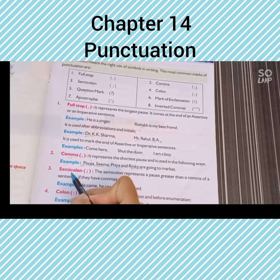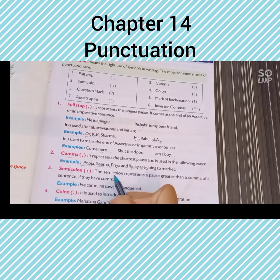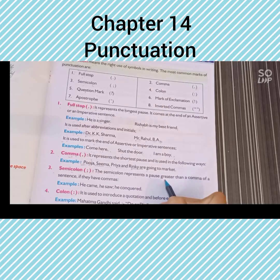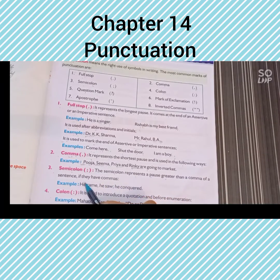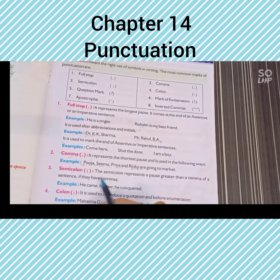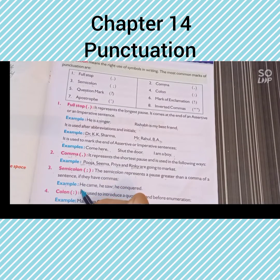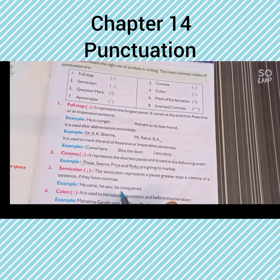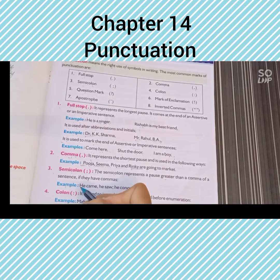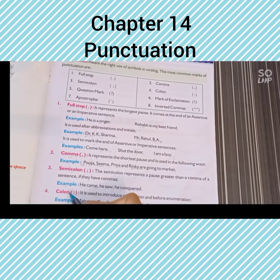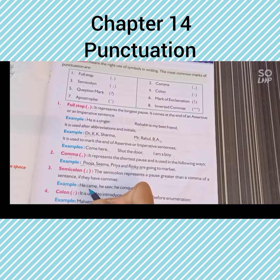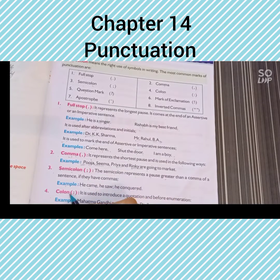Third point is semicolon. The semicolon represents a pause greater than a comma for a sentence, if they have commas. Example: He came; he saw; and he concurred. वो आया, उसने देखा, and he concurred — इनके बीच में हमने semicolon का use किया है।